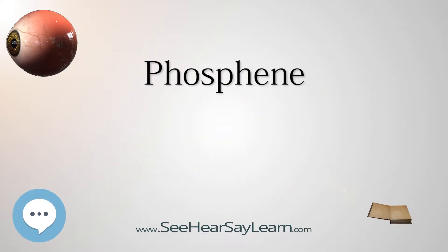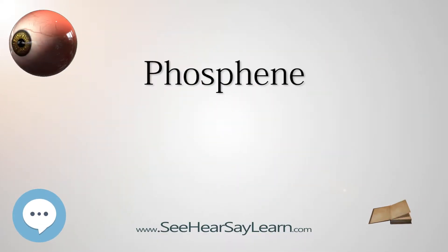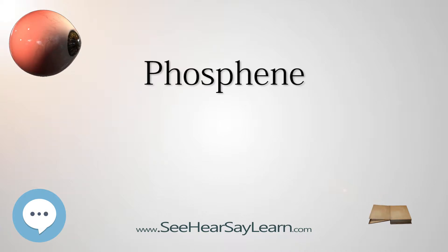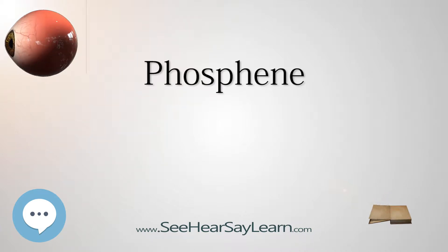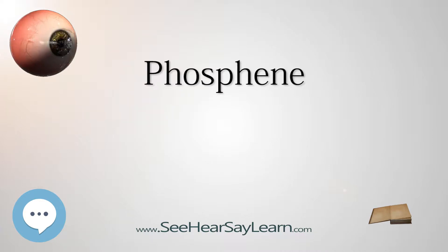A phosphene is a phenomenon characterized by the experience of seeing light without light actually entering the eye. The word phosphene comes from the Greek words phos, meaning light, and phanion, meaning to show.